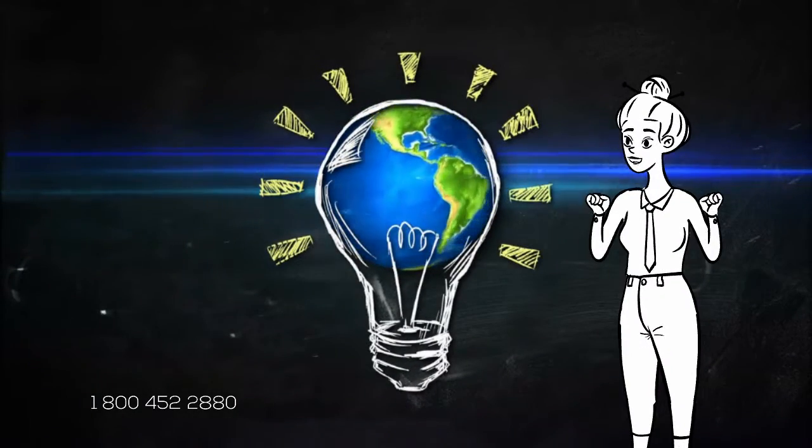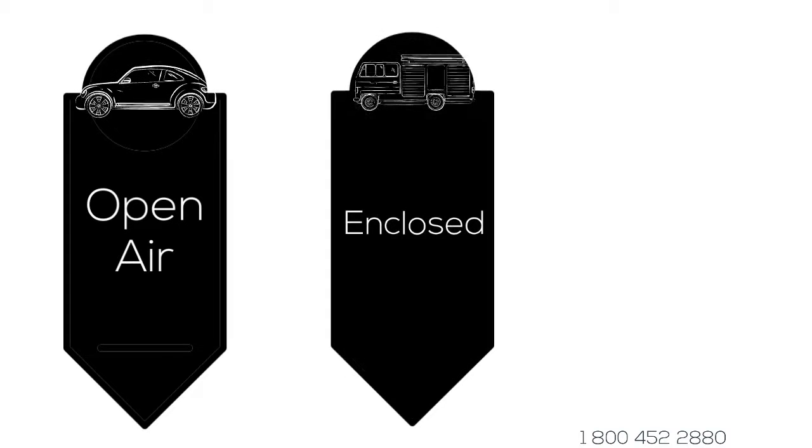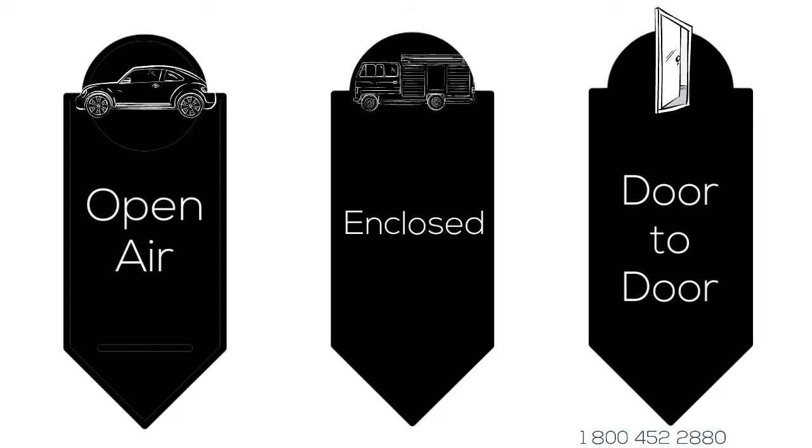We offer different types of shipping services that will fit any budget. Open air, the fastest and cheapest way to transport your vehicle. Enclosed, a little more time to deliver, but protection from all the elements. Door to door, a way to deliver your vehicle right to your doorstep.